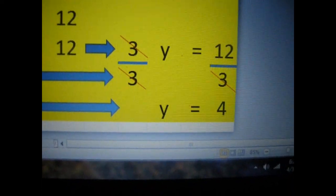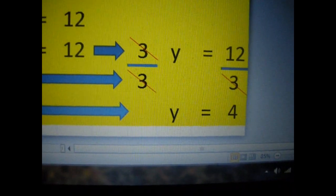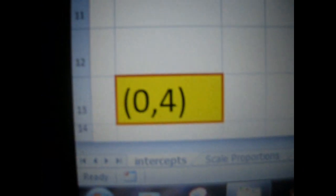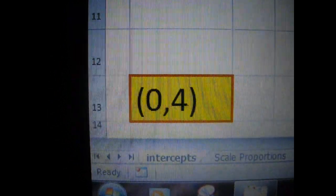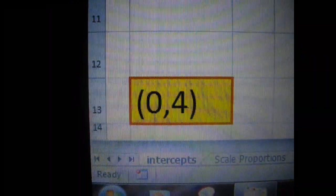We are left with Y equals 4. So over here, the coordinates are 0 for X, comma, and 4 for Y.